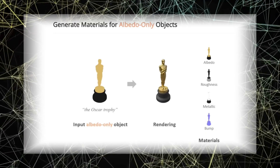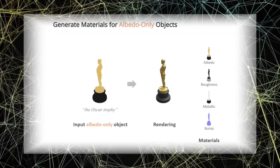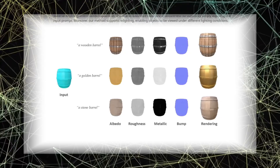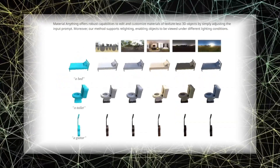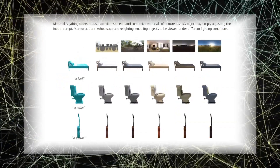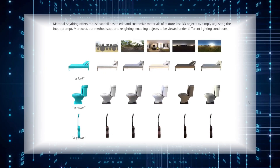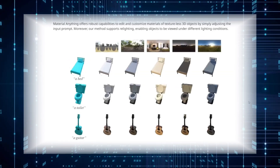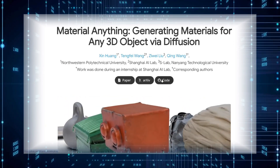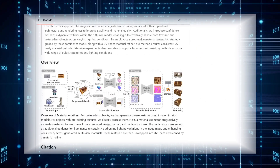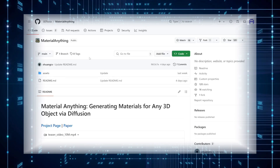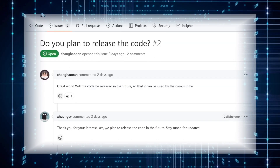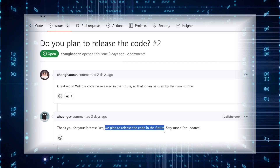One of the best things about PBR textures is their adaptability to different lighting conditions, meaning your 3D models will look realistic in various environments — whether it's for animation, video games, or virtual reality. Material Anything makes creating detailed and realistic 3D models faster and easier than ever. While their GitHub page is currently empty, the creators plan to release the code soon, so keep an eye out for updates.